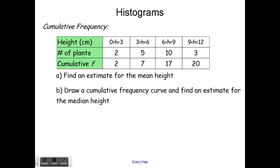For the first interval the cumulative frequency is 2 — same as the frequency. Then I add 5 to get 7, add 10 to get 17, and add 3 to get 20. So it's showing, as you go, the running total number of plants. The first part of the question asks us to find an estimate for the mean height and draw a cumulative frequency curve, then find an estimate for the median height.